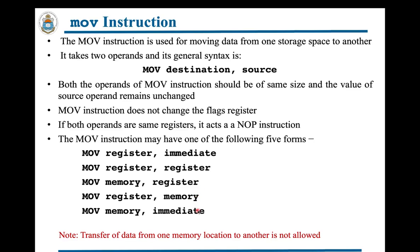The MOV instruction can take any of these five forms. The source can be an immediate value, a register, or the contents of a memory address, and the destination can be a register or memory. Keep in mind that in x86, transfer of data directly from one memory location to another is not allowed.